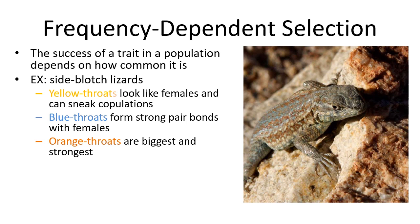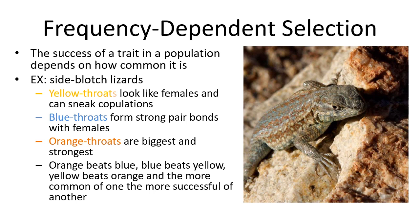Each morph is like rock-paper-scissors: orange throats beat blue because they're bigger and can displace them; blue beats yellow because they're so close to their female that sneaker males can't get in; yellow beats orange because they look like females and won't be driven off. So if there are many orange ones, yellow will be successful next generation; if many yellow, blue will be successful. This interplay allows each trait to remain in the population.